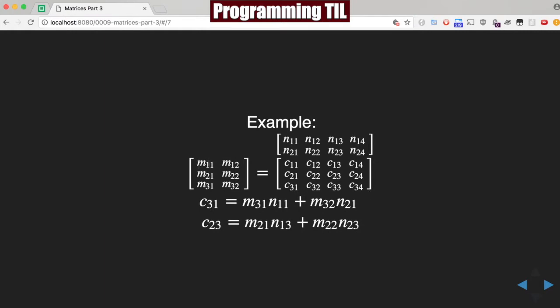So you can see, we can line this up, and this will make it really easy to see. So we have C31 here, this element right here. And what we're going to do is take the dot product of the row of M with the columns of N. So M31 times N11 plus M32 times N21 will be C31.